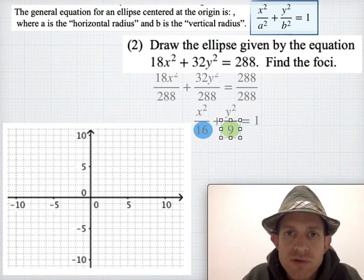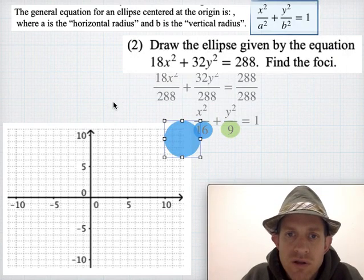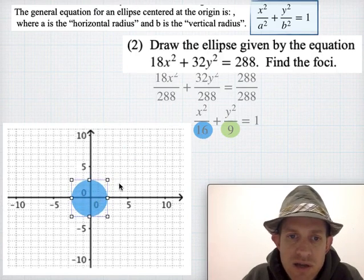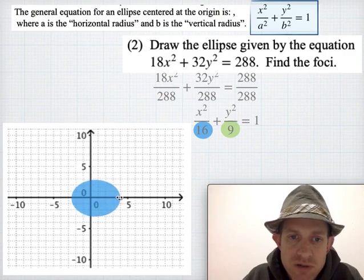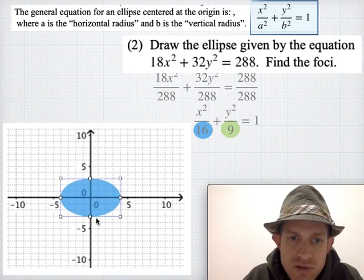To draw this ellipse, it's centered at zero zero with a horizontal radius of 4, so we go out 1, 2, 3, 4 in both directions. And it has a vertical radius of 3, so we go up and down 3 units.